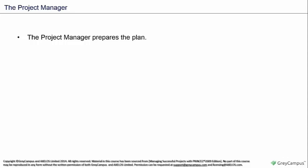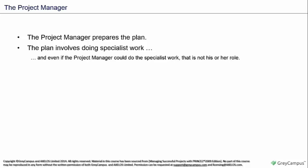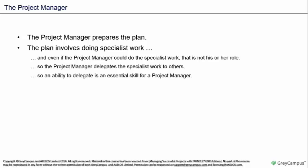Let's start by looking at some of the things that a project manager does. One of the most important things is to prepare the plan for the project, and the plan involves doing what we call specialist work. Specialist work will depend on the type of project - for example, if you were building a building, specialist work would be things like designing the building, laying the foundations, laying the bricks, or putting the roof on it. Even if the project manager can do the specialist work, it is not the project manager's role to do it, so the project manager delegates the specialist work to other people. An ability to delegate is an essential skill for a project manager.